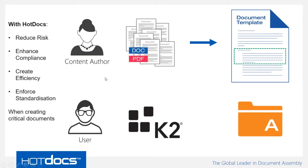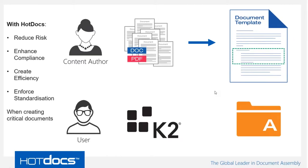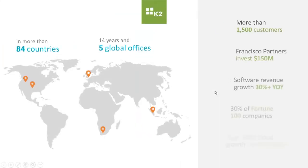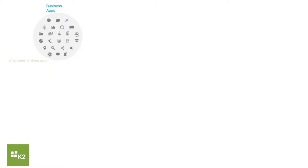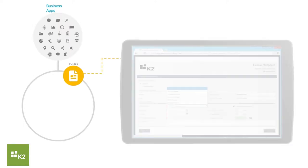Thanks Graham. K2 has been around since about 2001 — we have more than 1,500 customers across 84 countries, and 30% of our customers are Fortune 100 companies. Like HotDocs we cover all sorts of vertical markets from legal through financial services to local and central government. K2 is a business process application platform which allows you to turn complex work into powerful business process applications such as customer onboarding, policy approvals, and vendor management.